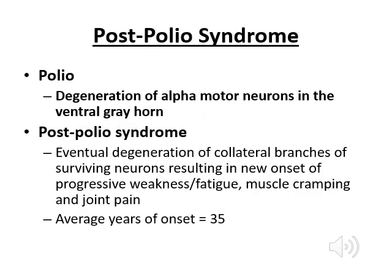You may also encounter post-polio syndrome. Polio was a viral infection that caused degeneration of alpha motor neurons in the ventral gray horn, creating significant weakness. What happens is that some non-destroyed neurons branch out and synapse on muscle cells that were denervated by the damaged alpha motor neurons, partially compensating for the lost function so the person didn't feel as much weakness.